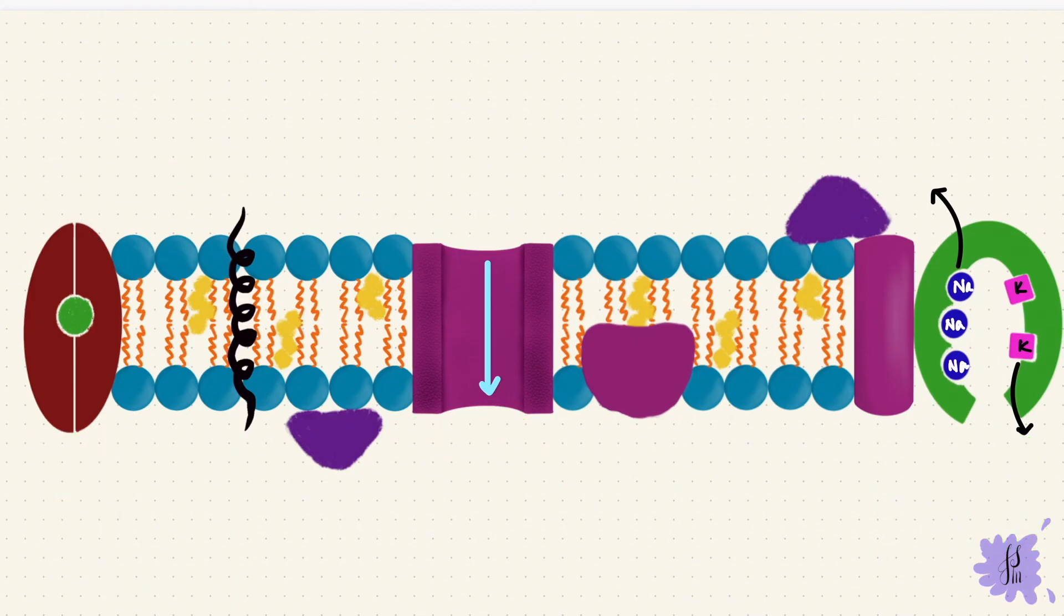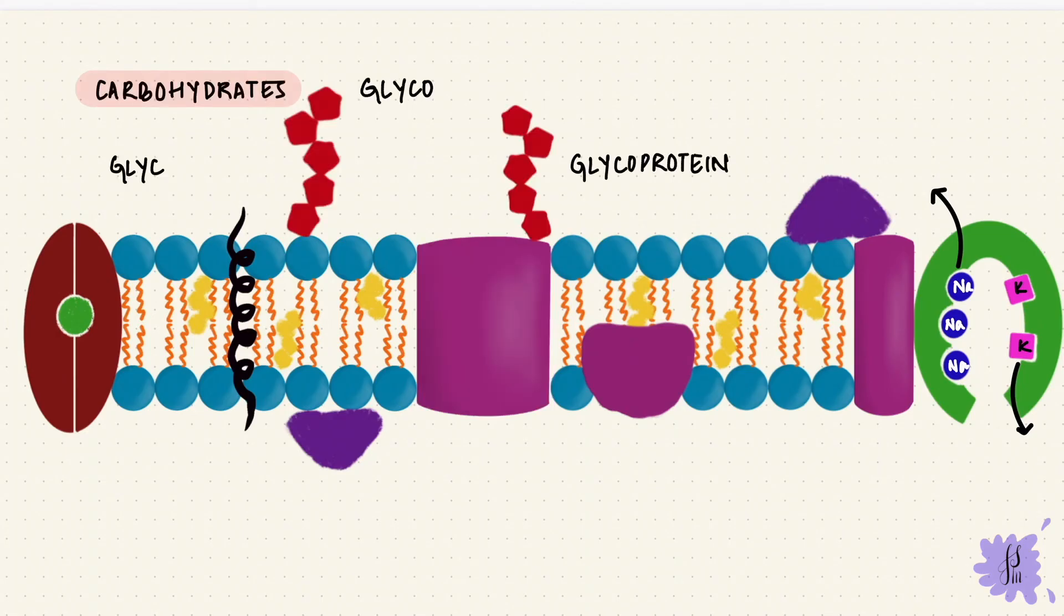The last component is the carbohydrate portion. They form the glyco part of the glycoproteins and glycolipids, so they're associated with both proteins and lipids. They are outside the cell membrane. The glyco portion projects outside, and together they form a coat called a glycocalyx. Carbohydrates can help cells attach to each other, form receptors for some hormones, and help with cell recognition and immune responses.